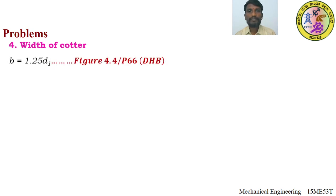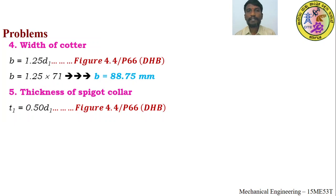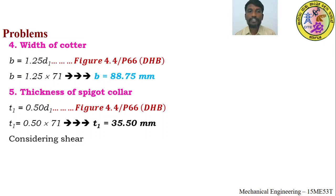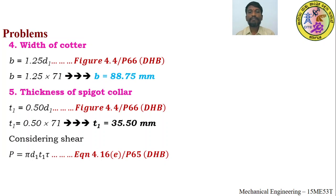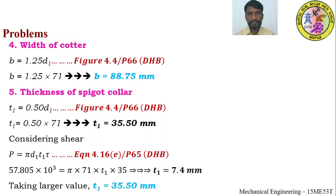Point 4 — Width of cotter: b = 1.25 × d1 = 1.25 × 71 = 88.75 mm. Point 5 — Thickness of spigot collar t1: From figure 4.4, t1 = 0.5 × d1 = 35.5 mm. Considering shearing (equation 4.16e, page 65), t1 = 7.4 mm. Taking the maximum, the adopted value of t1 is 35.5 mm.